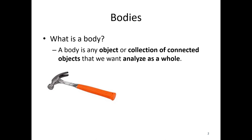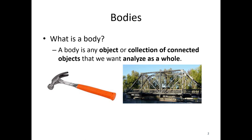This could be something as simple as a hammer — one object that is our object of analysis. It could be something as large as a bridge. It could also be something like a pair of scissors. We could treat the pair of scissors as a body as a whole, or we could break this down into multiple pieces, each of which is itself a body. Body one is this piece, body two is this piece, and body three would be the rivet holding the two pieces together.